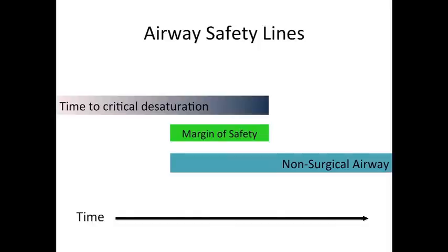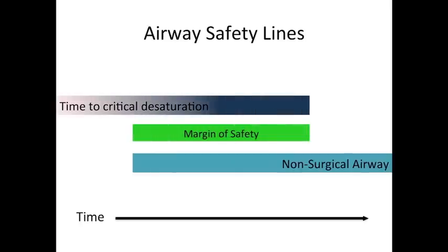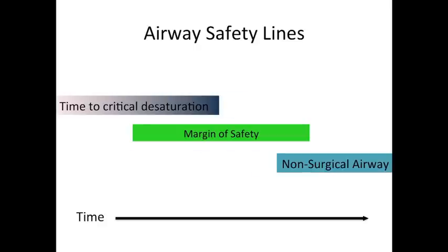In order to increase our margin of safety and thereby prevent hypoxia, there are a number of specific actions that can prolong our time to critical desaturation, as well as improving our efficiency in establishing a non-surgical airway. There are also clinical factors which can decrease the time to critical desaturation and impede early establishment of a non-surgical airway, decreasing the margin of safety, or in extreme cases eliminating it entirely and exposing the patient to the risks of critical hypoxia.